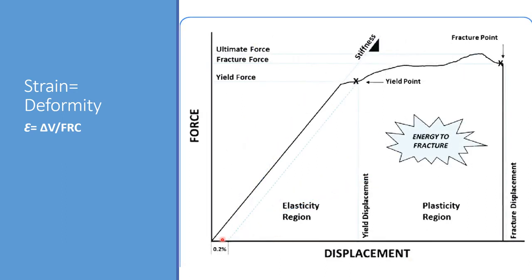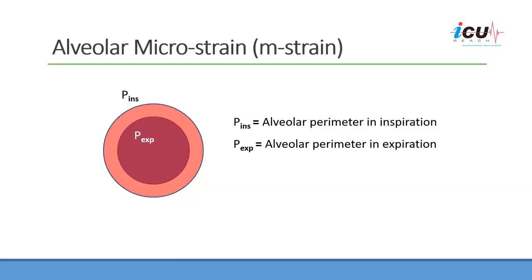The more force you apply, the more displacement you end up having, until you reach a point called the yield point. If you continue to apply the same or higher force, you reach the fracture point — which corresponds to pneumothorax in our biological lung tissue.